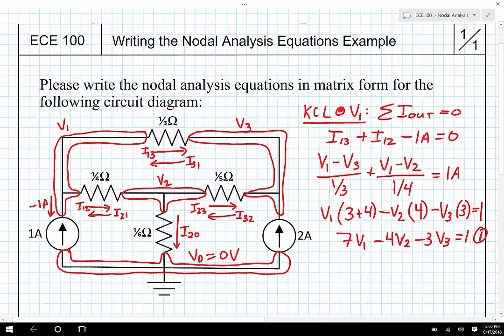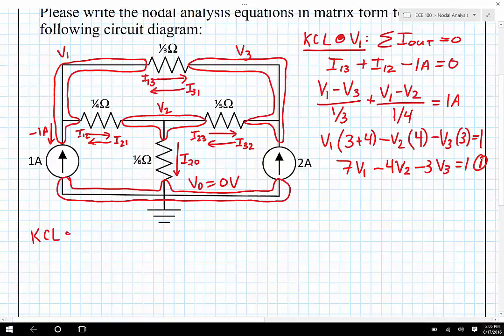Now I need to do that process for each of the other two nodes as well. So let's do Kirchhoff's current law at node two, so KCL at V2. Well, here at V2 I can see that I sub 2,1 is leaving, and I can see that I 2,3 is leaving, and I can see that I 2,0 is leaving. No current source is directly attached to node two, so there's no constant there.